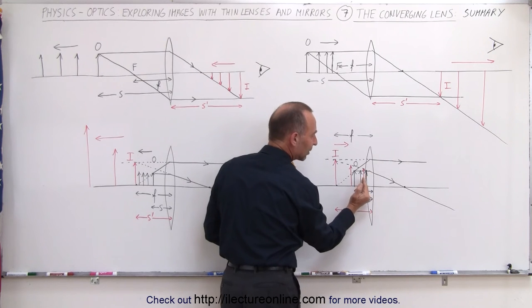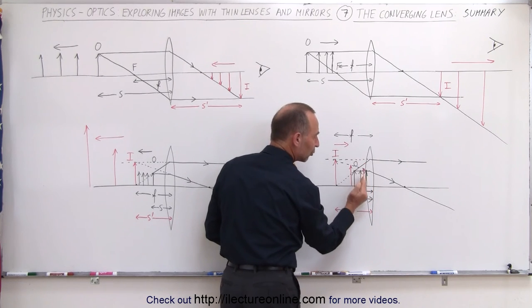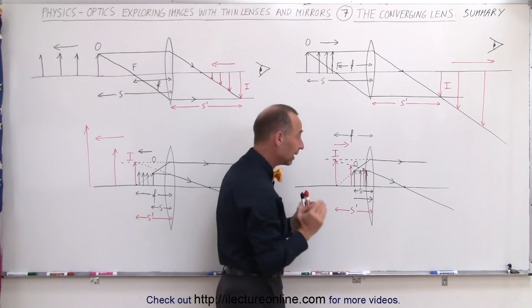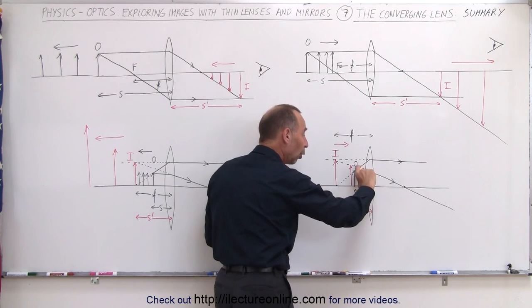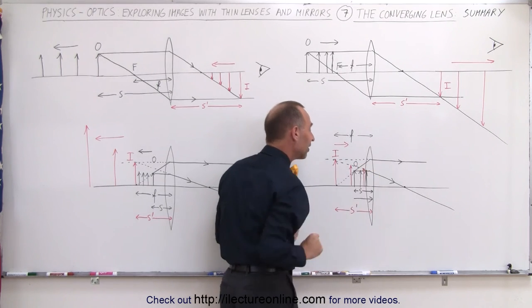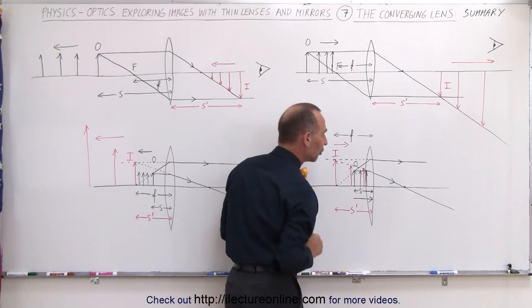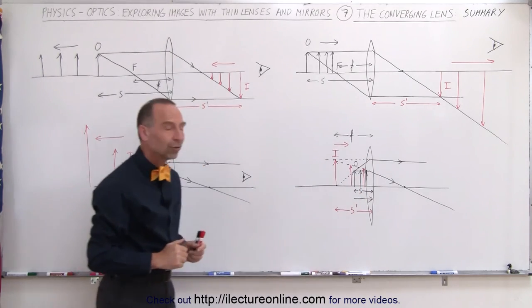In the end, as the object gets really close to the lens, the image will be right behind it — still a virtual image, but upright and almost the same size as the object as it gets closer and closer to the lens.